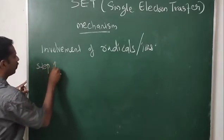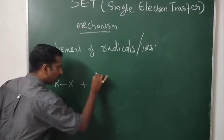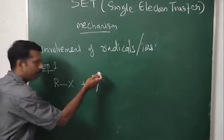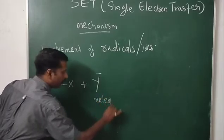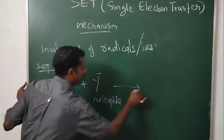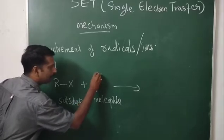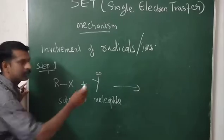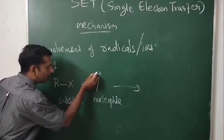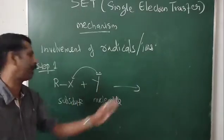Step 1: Our substrate molecule is RX and our nucleophile is Y minus. In the first step, an electron is transferred from the nucleophile into the substrate molecule. Y minus means it carries a pair of electrons — for example, OH minus or Y minus. One electron from this pair is transferred into the substrate molecule to form a radical anion.